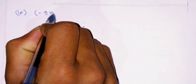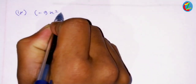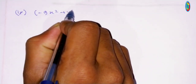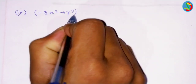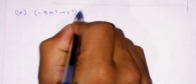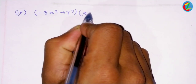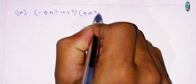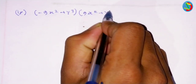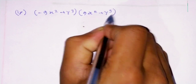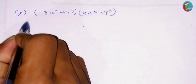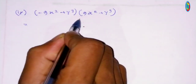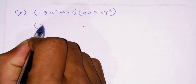The answer is 9x squared plus y to the power 3, whole into 9x to the power 2 plus y to the power 3.